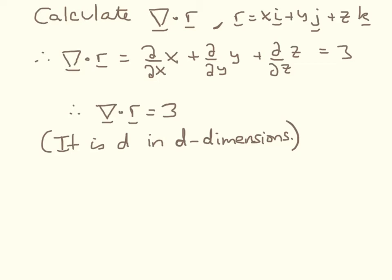You can fairly straightforwardly see that if you had a position vector in two-dimensional space, you would get 2 for the divergence, and if you were to go to a four-dimensional space, you would get 4. In d dimensions, the divergence would be d.